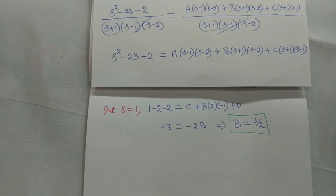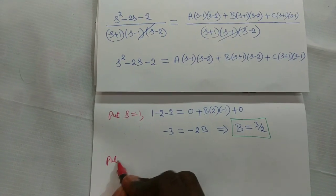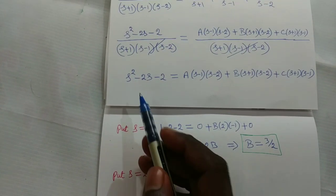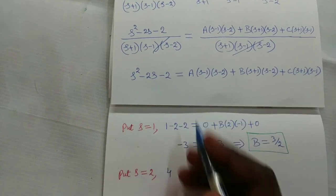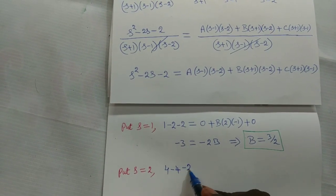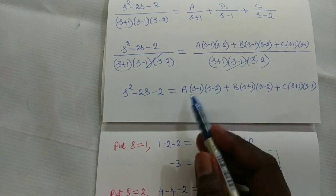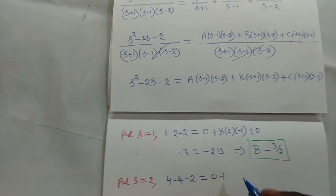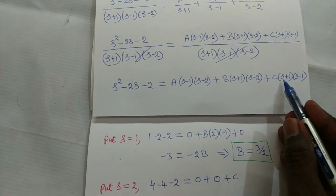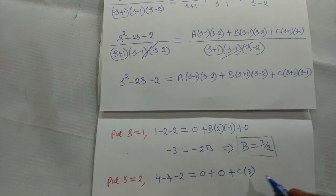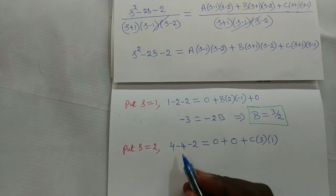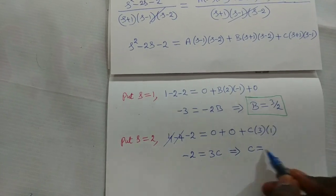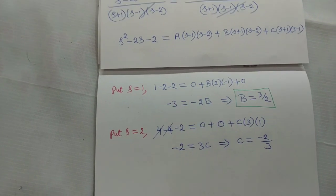To find C, put s equal to 2. The A-term and B-term become zero. So 4 − 4 − 2 equals minus 2, which equals C·(2+1)·(2−1) equals 3C. Therefore minus 2 equals 3C, which implies C equals −2/3.